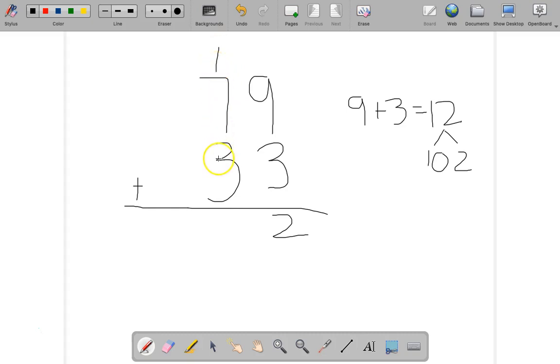Now I can add my tens place. I have 7 tens plus 3 tens, and that makes 10 tens. So I have 7 plus 3, and that makes 10 tens. I also have one more 1, and 10 plus 1 is the same thing as 11.